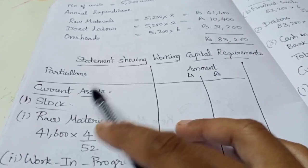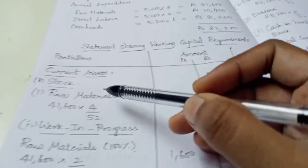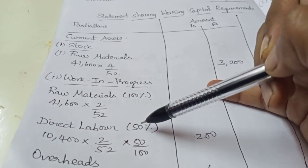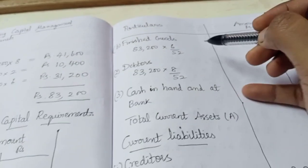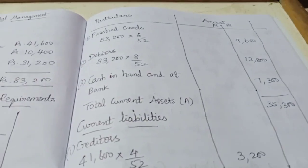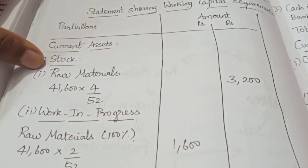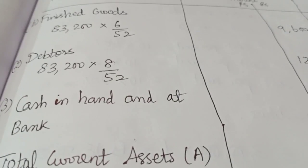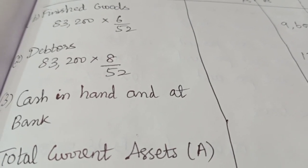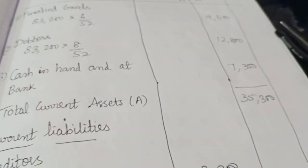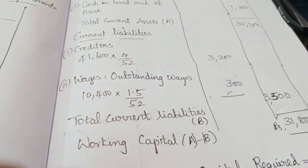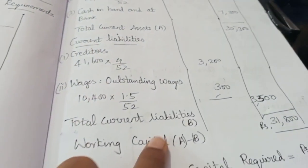First, we do current assets. Stock is the first item — raw material, work in progress, and finished goods. We will add stock in current assets, then debtors and cash in and at bank, giving total current assets. Next, current liabilities: creditors and outstanding wages, giving total current liabilities. Working capital equals current assets minus current liabilities.